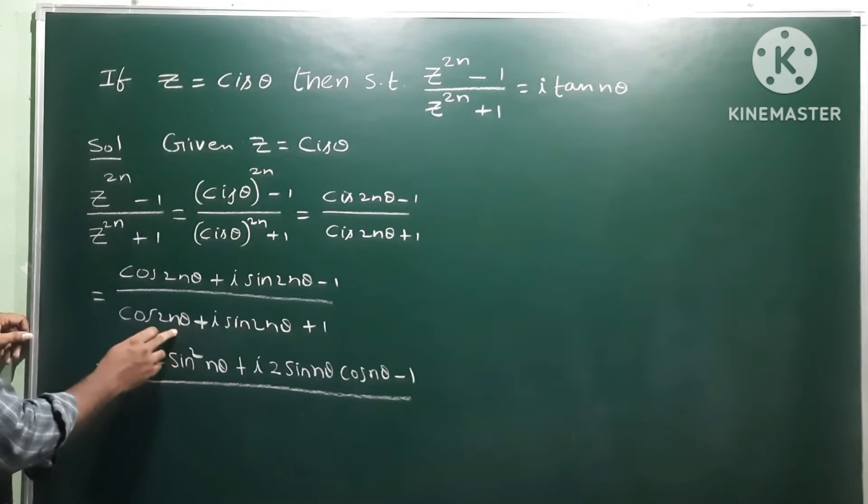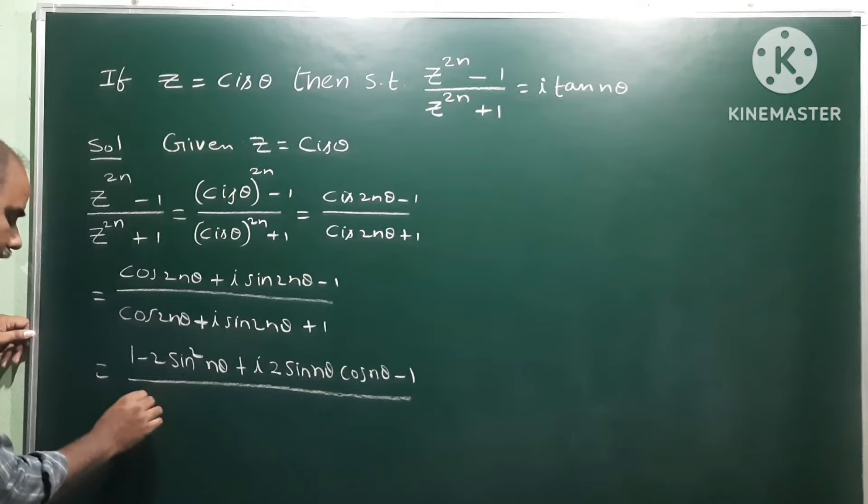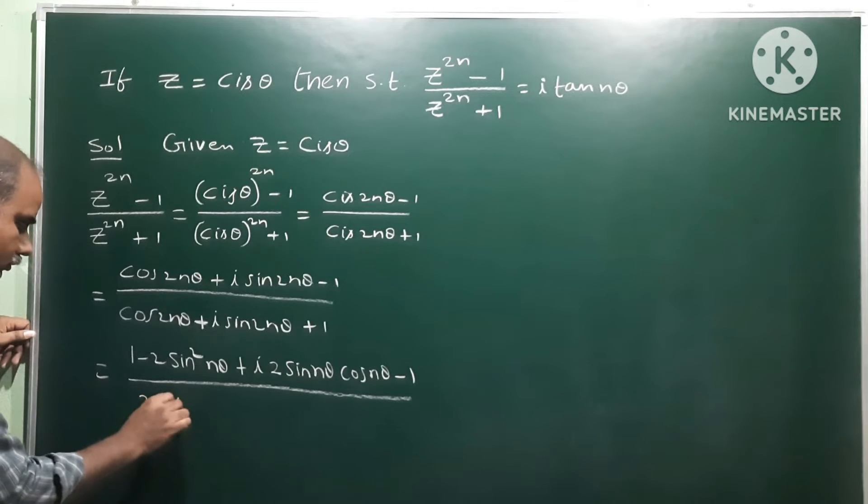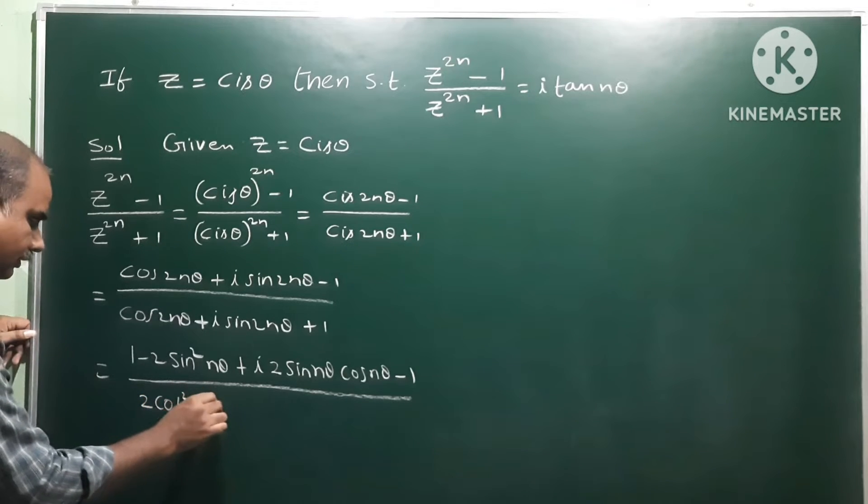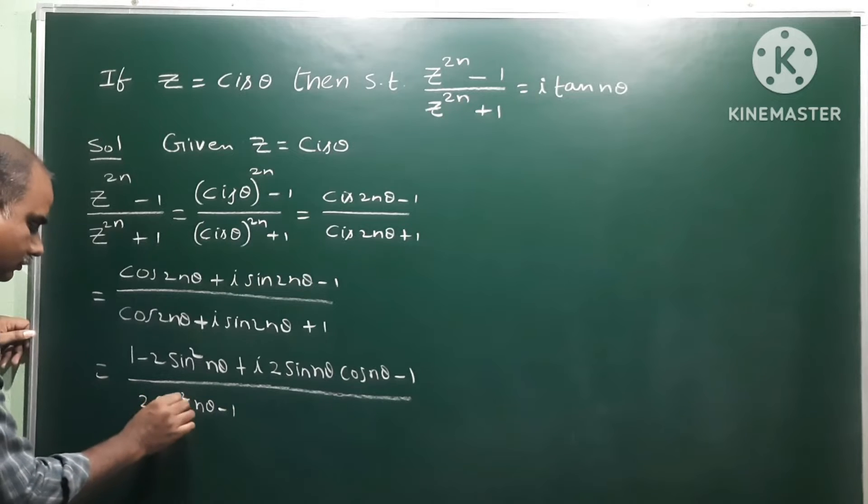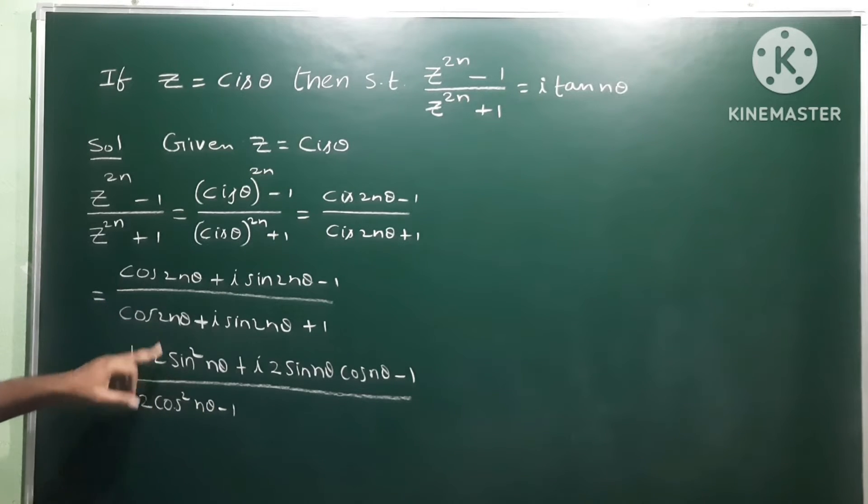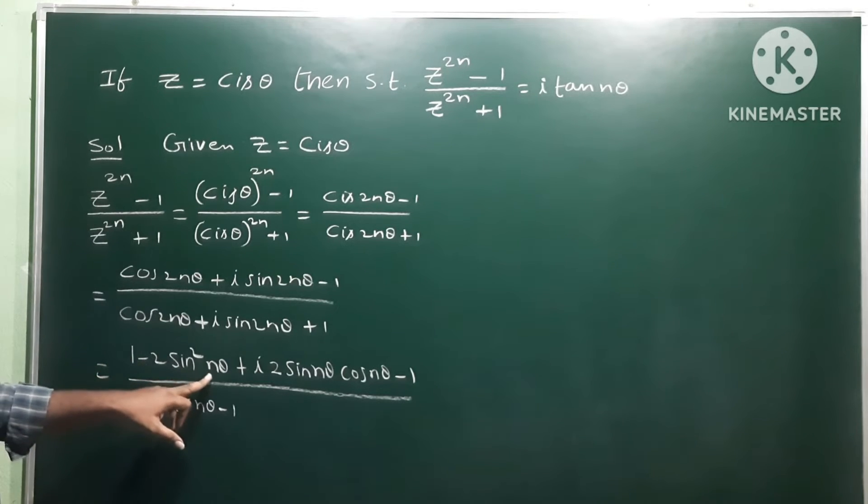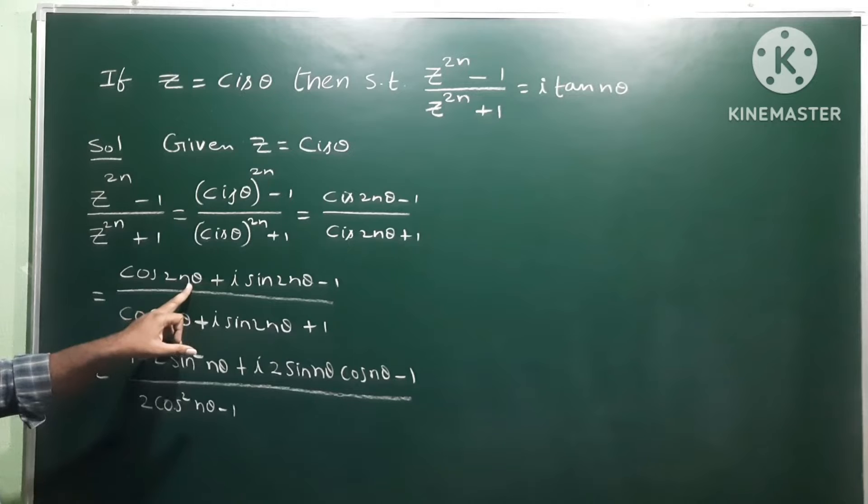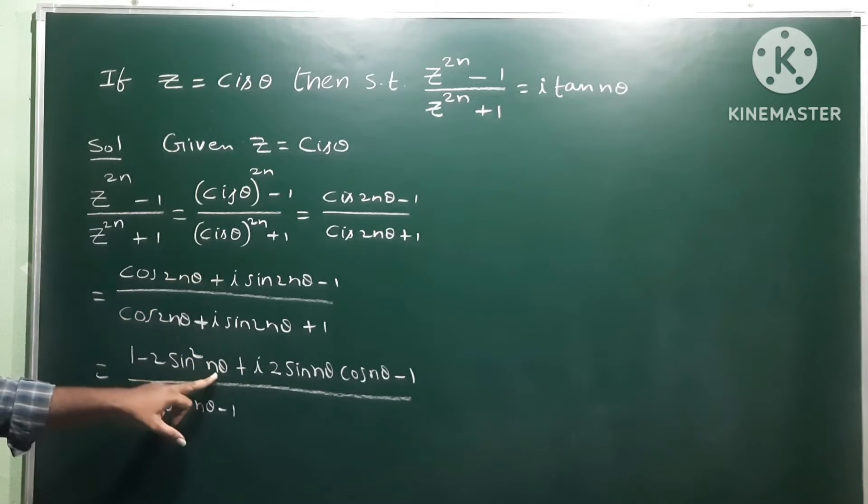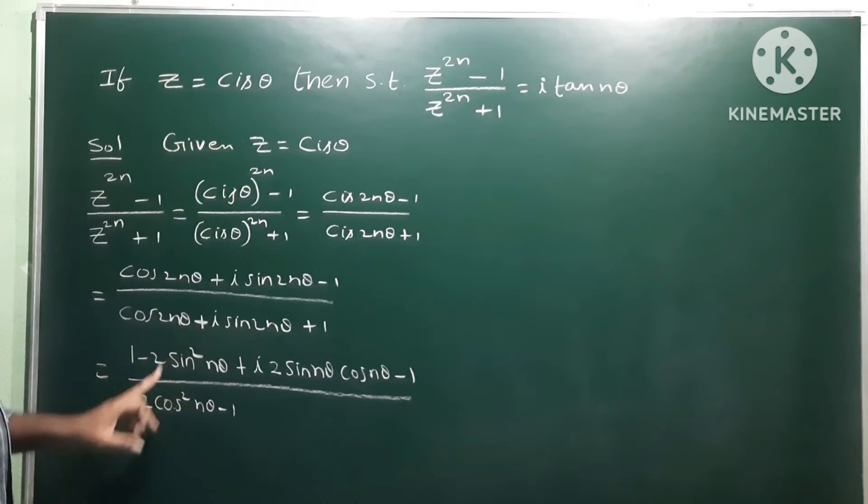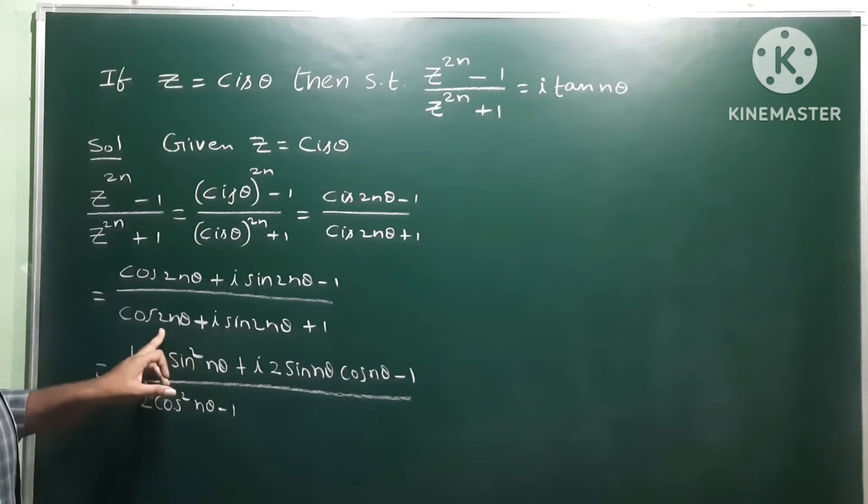cos 2nθ formula in terms of cos: 2cos²nθ minus 1. So here the formula is 1 minus 2sin²nθ minus 1. Cos 2nθ becomes 2cos²nθ minus 1.